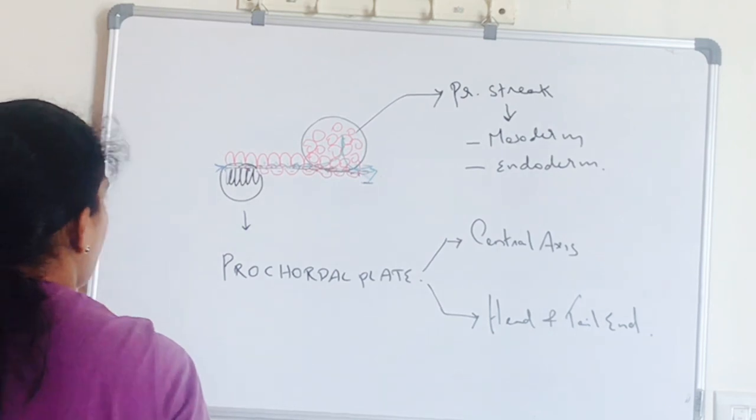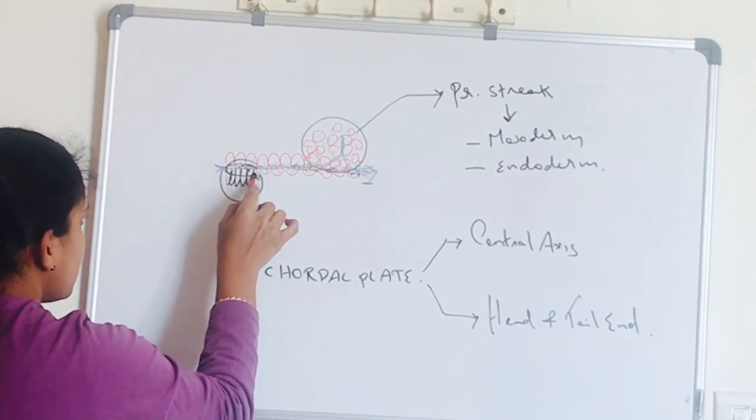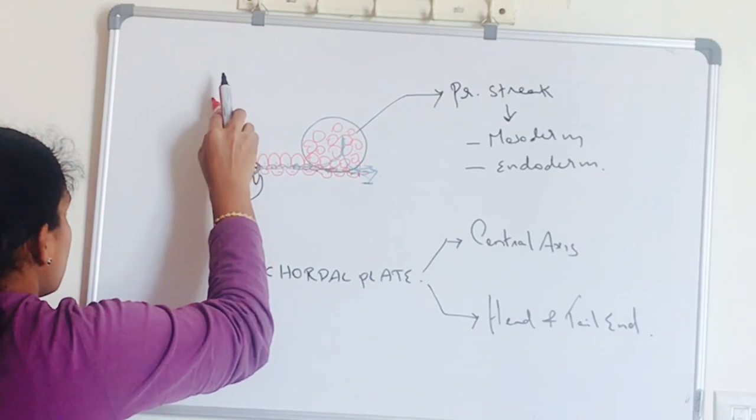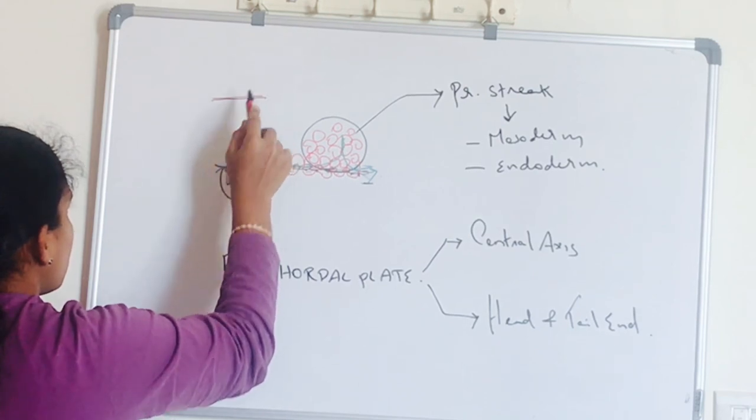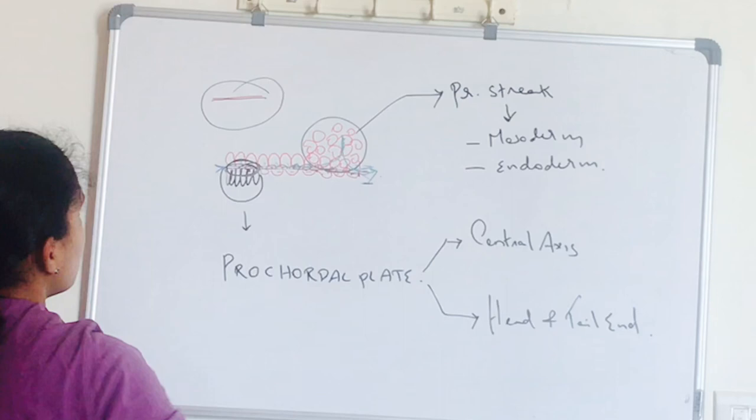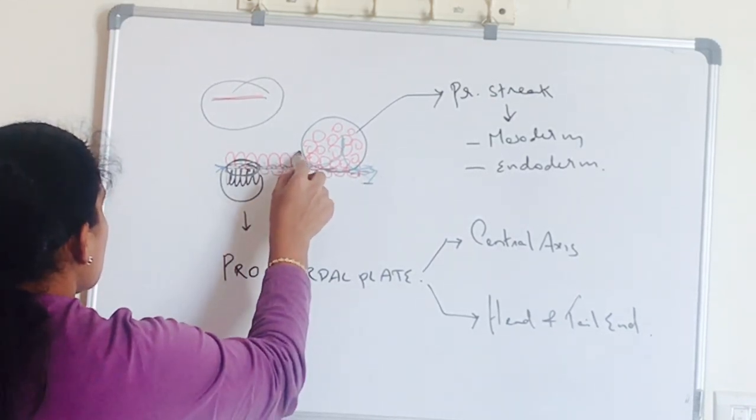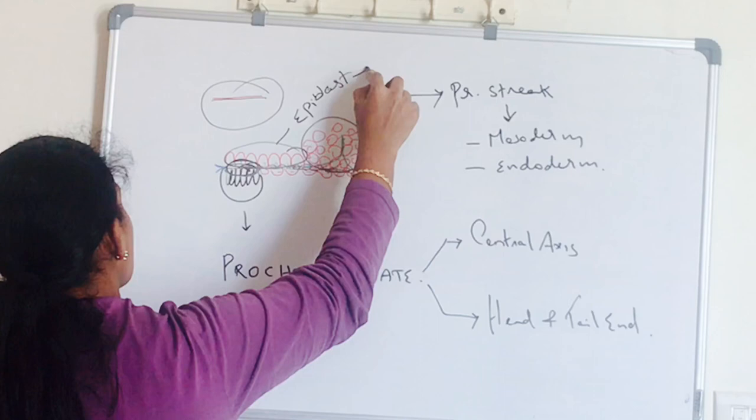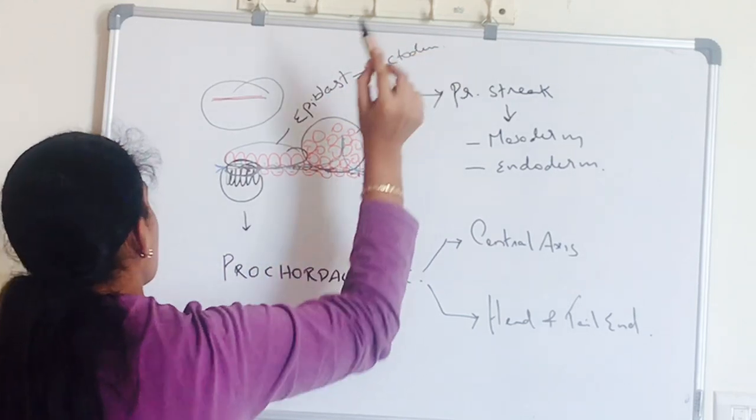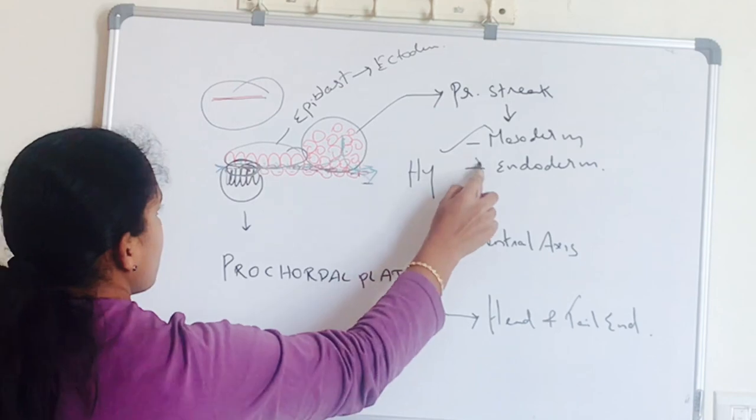So this cells of primitive streak, they spread between the two layers, epiblast and hypoblast. But they do not intervene at the place of prochordal plate. So in that region, ectoderm is in direct contact with the endoderm. There is no intervening mesoderm. As there is no mesoderm in the region of prochordal plate, this region becomes relatively thin and forms a membrane called buccopharyngeal membrane. And these left out epiblast cells become ectoderm. So the three layers: ectoderm from the epiblast, mesoderm and endoderm from the primitive streak.